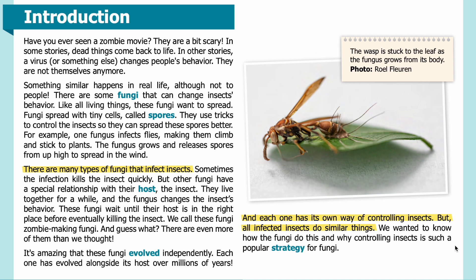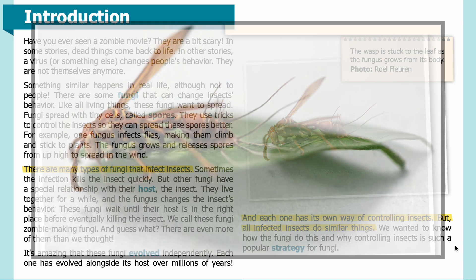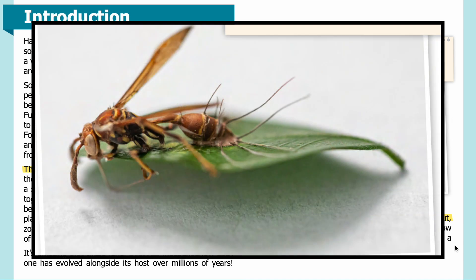Here, the wasp is stuck to the leaf as the fungus grows from its body. The leaf is green and the wasp is on top of it, facing to the left, with one of its wings sticking up.